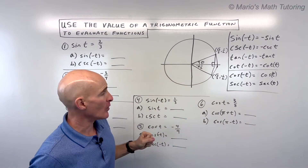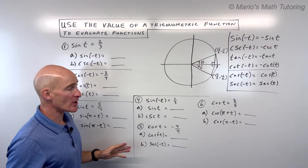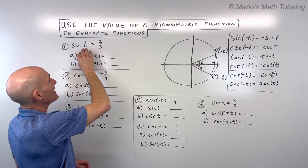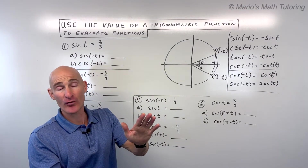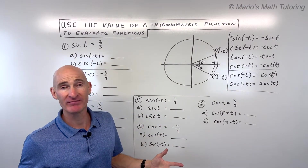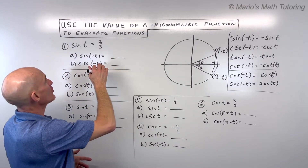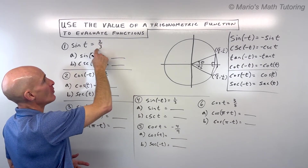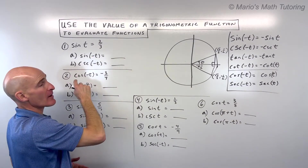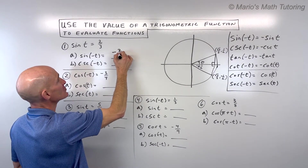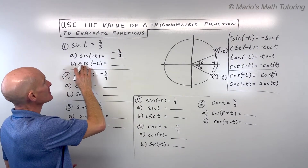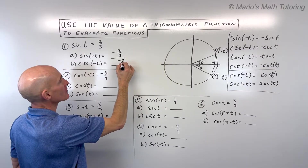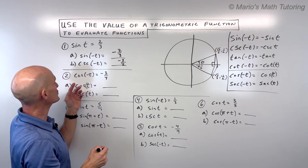Now we're going to apply that. In the first example, sine of t is equal to 2 thirds. We don't know what the angle is — it could be 30, 45, or 27.5 degrees. But we know that sine of negative t is going to be the same answer multiplied by negative 1, so this is going to be negative 2 thirds. Cosecant of negative t is the reciprocal of sine of negative t, so flipping that over gives negative 3 halves.